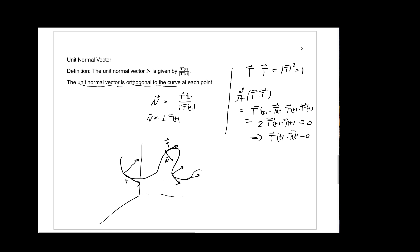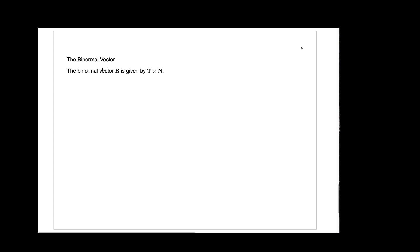We have the unit tangent vector and the unit normal vector. One final definition: the binormal vector B is given by T cross N, and these are vector quantities. The binormal vector is a unit vector because T and N are unit vectors and they're orthogonal. When two orthogonal vectors are crossed, the length of the cross product is just the product of their individual lengths — 1 times 1 — so B has length 1. B is always orthogonal to both T and N, and you can use the right-hand rule to find its direction.